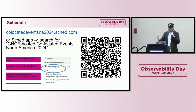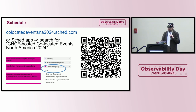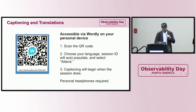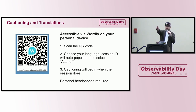To find the schedule for the rest of the day, you can go to this co-located events link. You can scan the QR code and then look for the observability day filter. Or if you're using your SCED app, you can search for that. Captioning and translation is available via Wordly on your personal device — please scan the QR code and it'll do it for you.